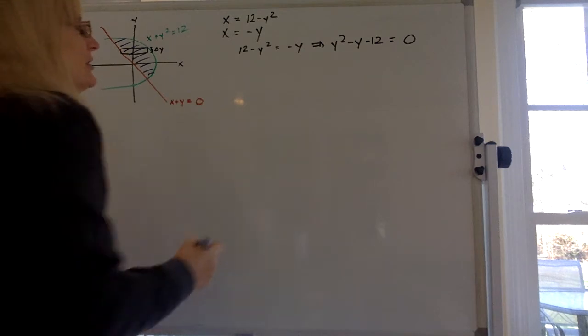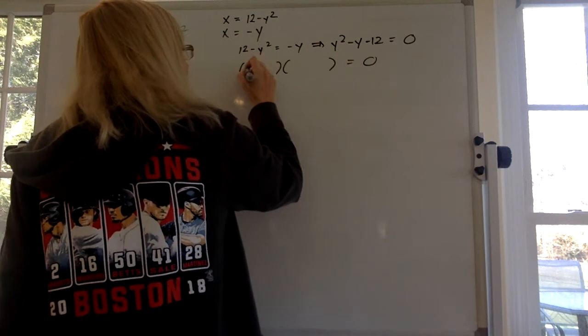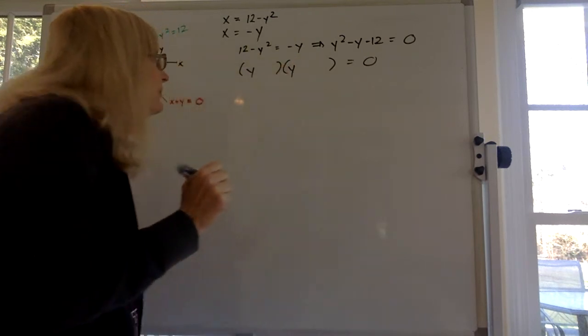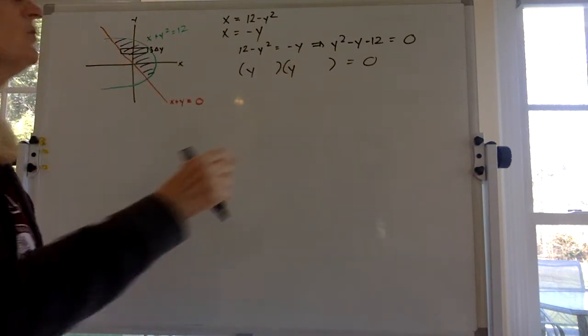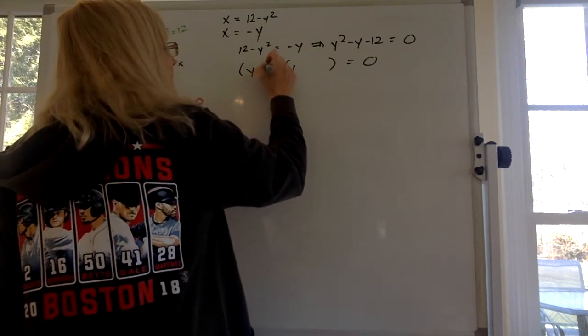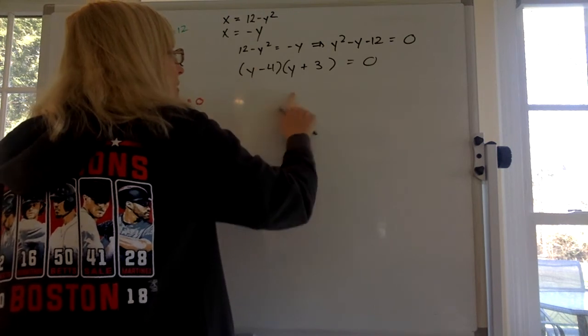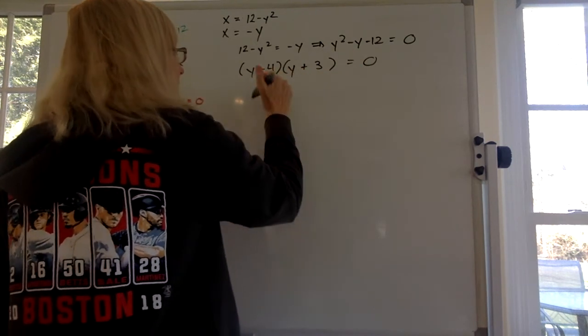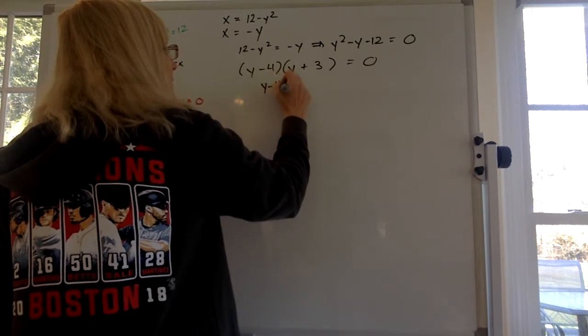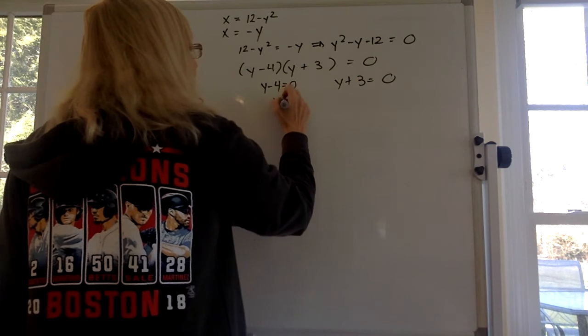It's starting to look a little familiar to find what y could be here. Basically you have to defoil. So you want to find factors of negative 12 that add up to negative 1. So I think that's going to be negative 4 plus 3. y squared plus 3y minus 4y uses the minus y minus 12. Bingo, we got it. Then use the zero product rule. Set each factor equal to 0 and solve for y.